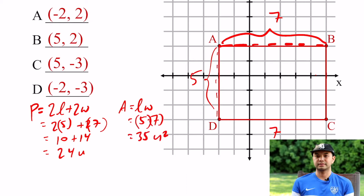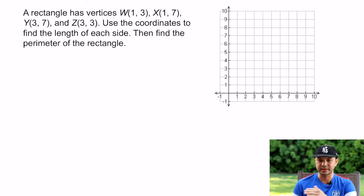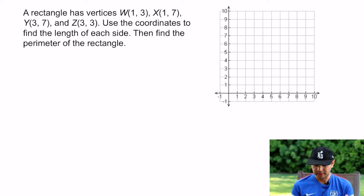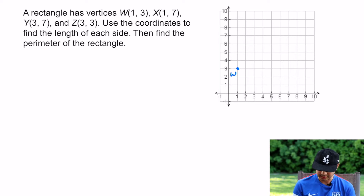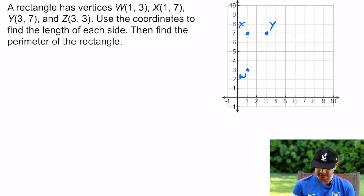Now we have an example where a rectangle has given vertices. It says to use the coordinates to find the length of each side. I'll plot the points — that's the easiest way. I'm plotting W, X, Y, and Z: W is (1,3), X is (1,7), Y is (3,7), and Z is (3,3). Since it's supposed to be a rectangle, if your plotted points don't form a rectangle, you made an error somewhere.